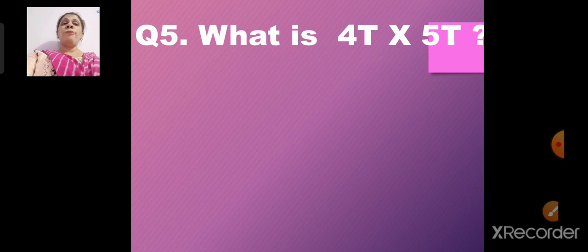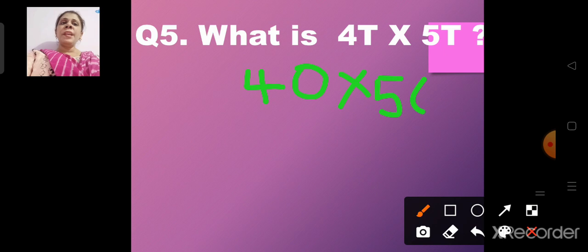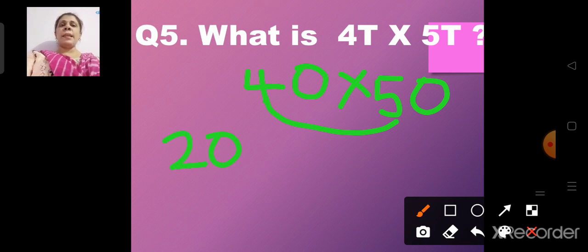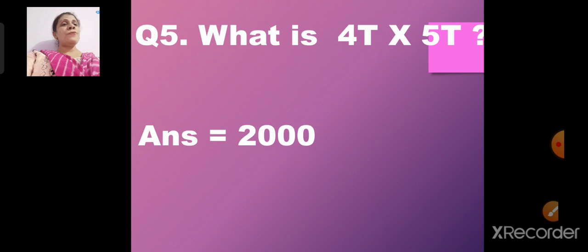Question number 5: What is 4T multiplied by 5T? T stands for 10, so 4T means 4 tens, which is 40, and 5T means 5 tens, which is 50. We multiply 4 by 5 to get 20, then account for the two zeros from 40 and 50. So 40 into 50 gives us 2000.